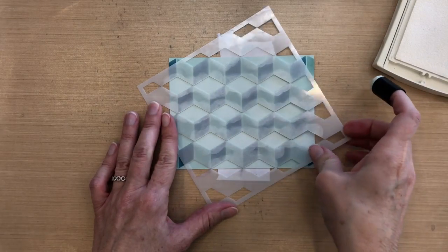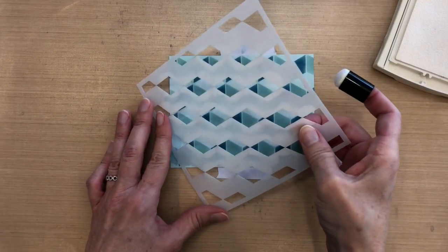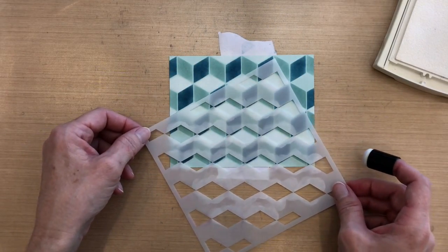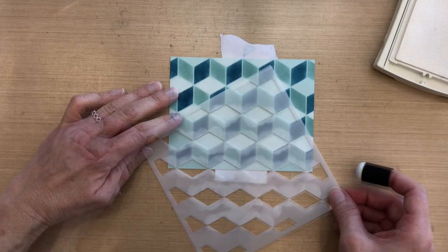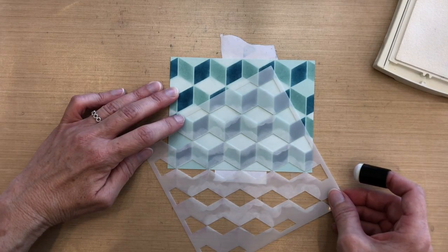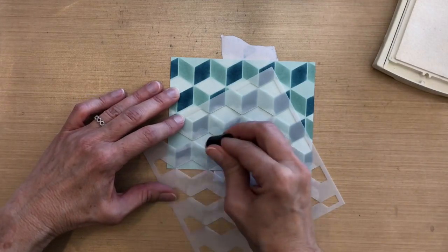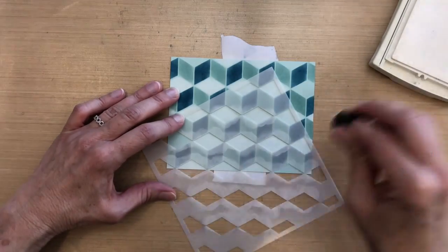So now moving the stencil down so that I get full exposure of the areas that have not yet been covered with the white. And then I'll just press it down, and each time the masking tape is still on the back of my cardstock and I'm just pressing the stencil once I get it positioned right.